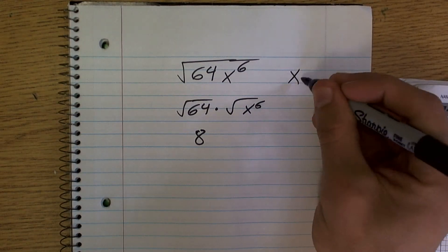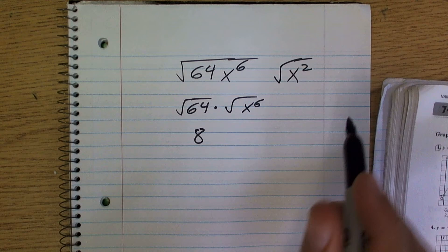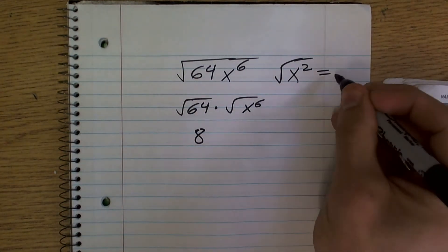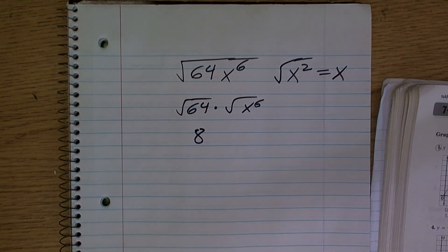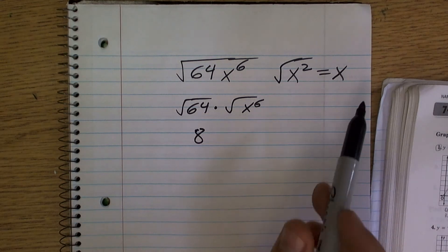Well, there's a couple things to remember. The square root of x squared, we know equals x, right? So we can take the square root of x squared, that's going to equal x.